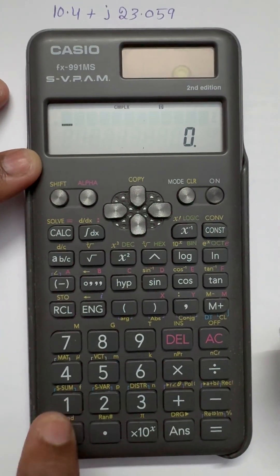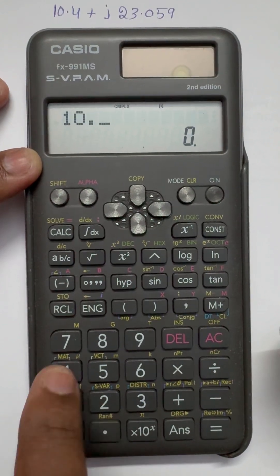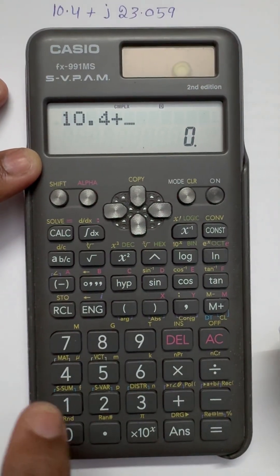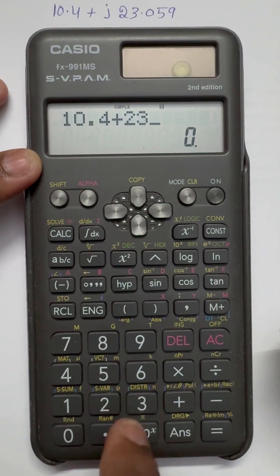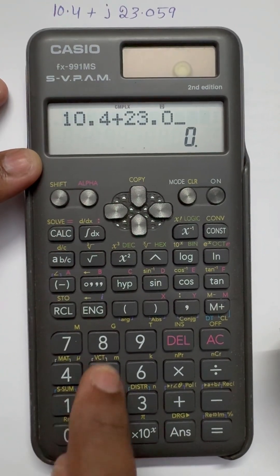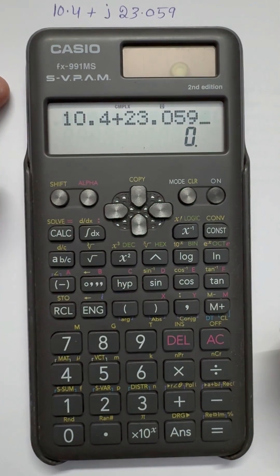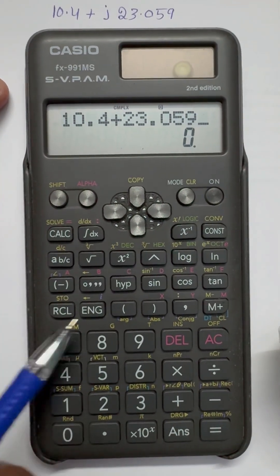Now I'm adding that value, 10.4 plus 23.059. And j is there. To get that j, we have to use this eng function.